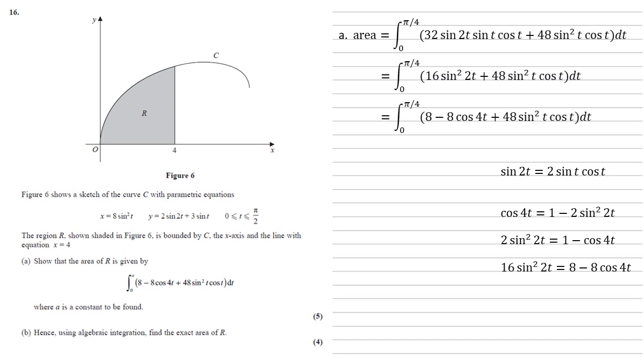Substituting this in, we have the integral between 0 and pi over 4 of 8 minus 8 cos 4t plus 48 sine squared t cos t dt, which is what we were aiming for.